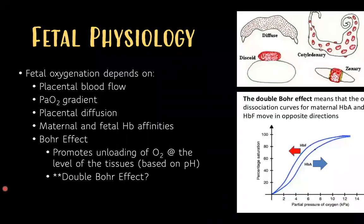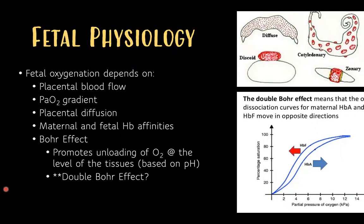Fetal oxygenation depends on placental blood flow, the PaO2 gradient between mother and fetus, the placenta's ability to diffuse oxygen, and the affinities of maternal and fetal hemoglobin. The Bohr effect promotes unloading of oxygen at the tissue level based on pH. The double Bohr effect describes how fetal hemoglobin has a higher affinity for oxygen than adult hemoglobin — adult hemoglobin gives off oxygen while fetal hemoglobin picks it up.